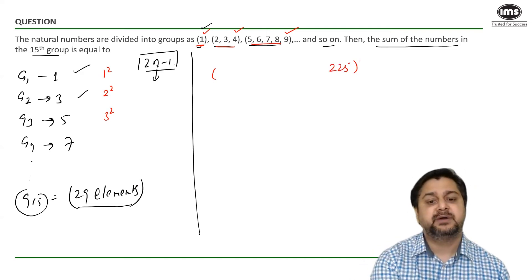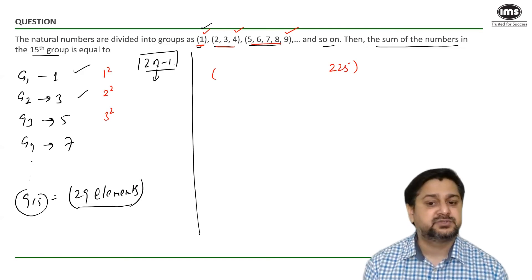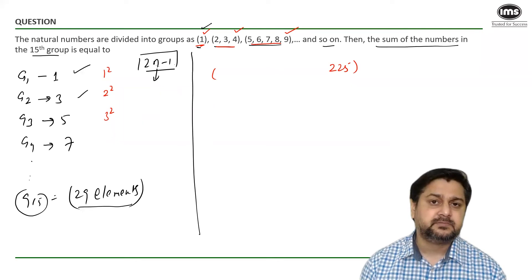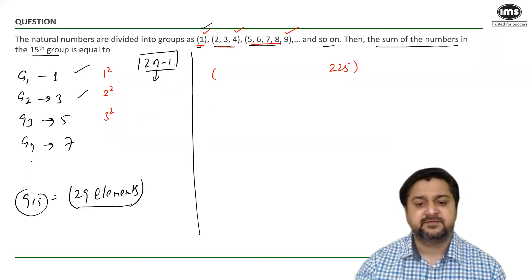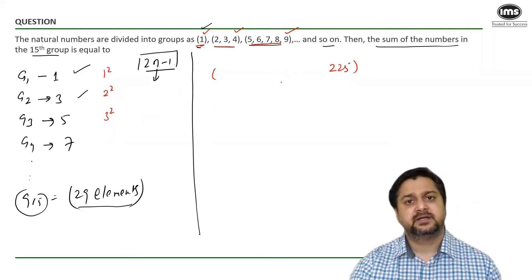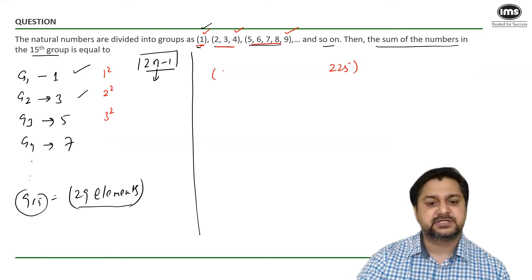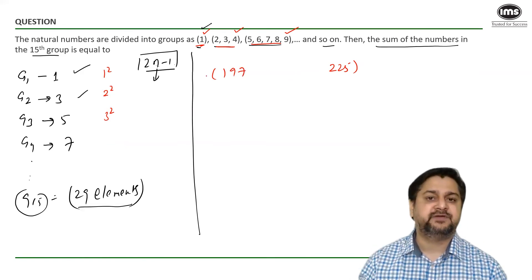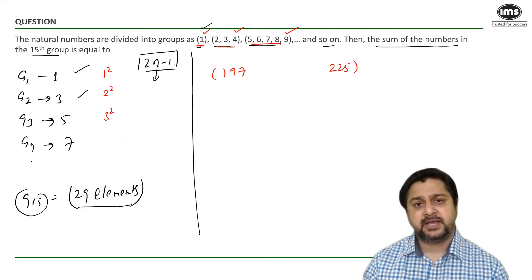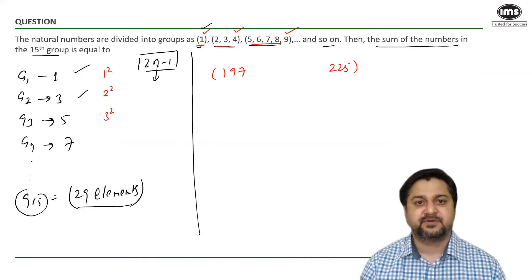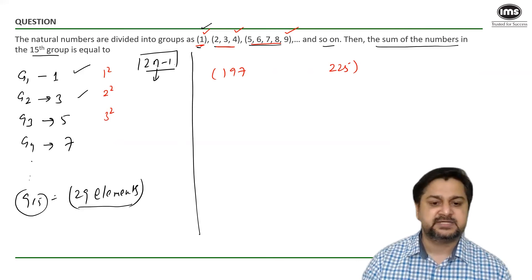Now in group number 15, the last element is 225 and I know the total number of elements are 29 including 225. So I can find out the first element also and I can find out the sum very easily. So 225 minus 28 would make it 197. So from 197 to 225, what is the total sum of all the values? They all are in AP. You know the first term, the last term, the common difference, and the number of terms as well.